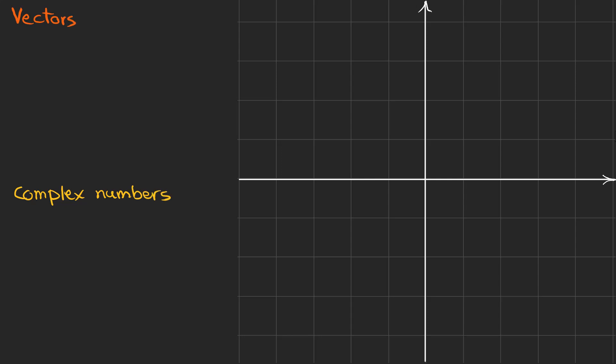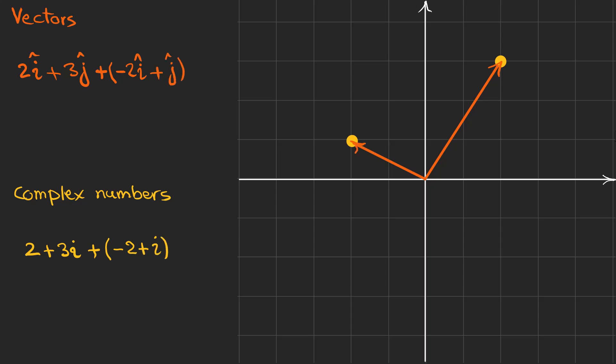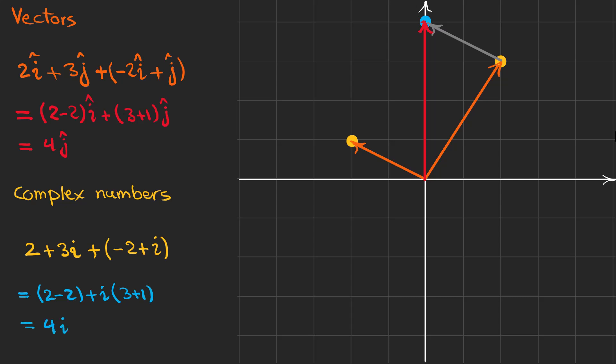Sometimes complex numbers behave like vectors, but not always. This point on our 2D plane can represent the complex number 2 plus 3i, and it can also show the endpoint of a vector. Consider another complex number and vector: minus 2 plus i. When we add these vectors we get 4j, adding the x and y components separately. For complex numbers, we add the real parts and imaginary parts — the answer is 4i — which resembles the component form we use for vectors.